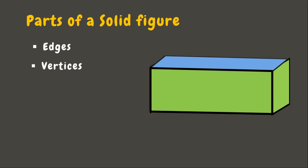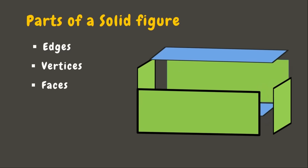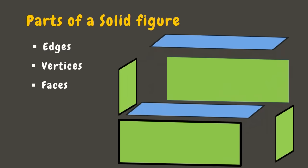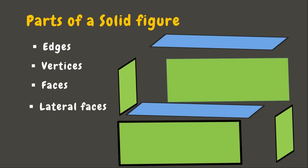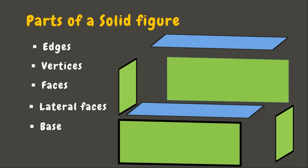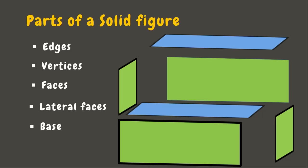Next in line are the faces. Faces are the flat surfaces of a figure. In the given figure, it has six faces. The lateral faces are the flat surfaces that do not include the top or bottom part of the figure — the given figure has four lateral faces. Lastly, the base is the top or bottom part of the figure; this figure has two bases.